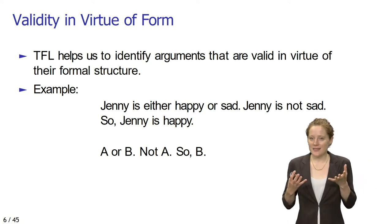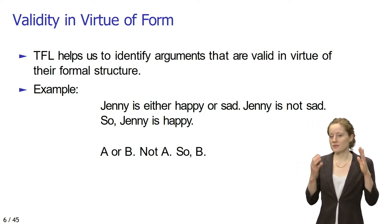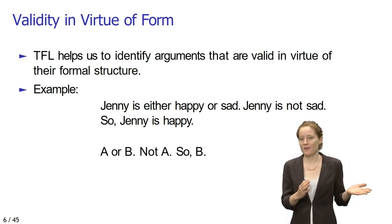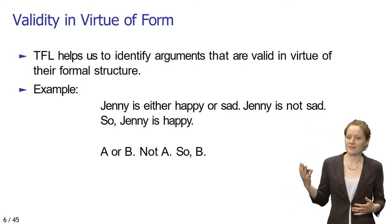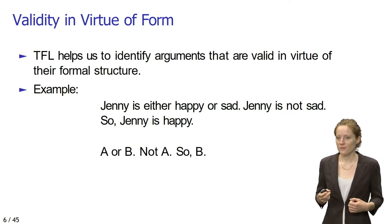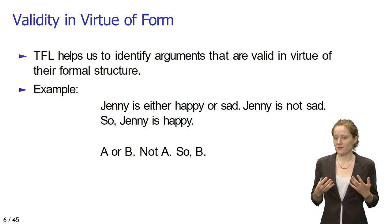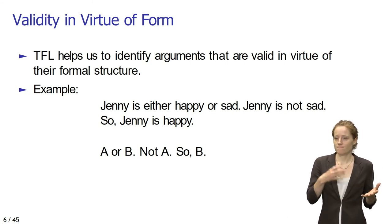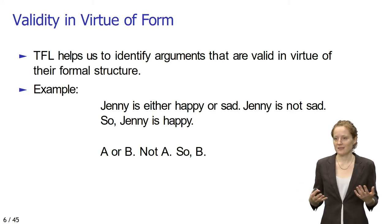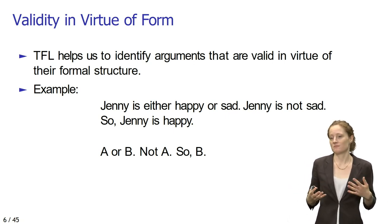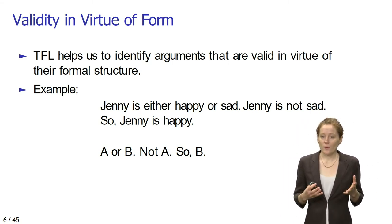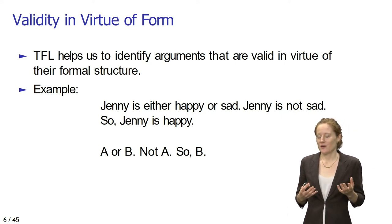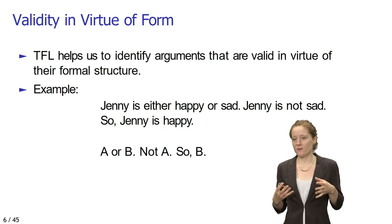This argument has a specific formal structure. Suppose we use the capital letter A to represent the sentence 'Jenny is happy' and B to represent 'Jenny is sad.' We can then represent the argument as follows: A or B, not A, so B. And any argument that possesses this structure — A or B, not A, so B — is valid. So what we are doing in this class is figuring out which arguments are valid in virtue of the form that they possess, which means we must first and foremost try to uncover the formal structure of arguments.